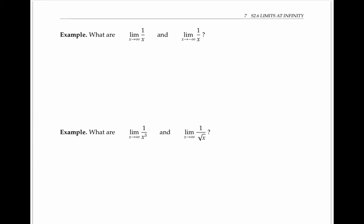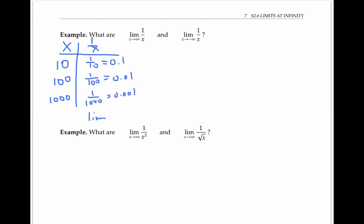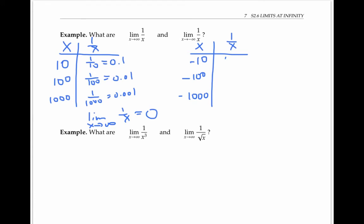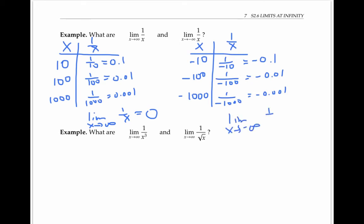Finally, let's look at limits at infinity for some functions without looking at the graphs first. To find the limit as x goes to infinity of one over x, as x gets bigger and bigger, one over x gets smaller and smaller. So the limit as x goes to infinity of one over x equals zero. Similarly, the limit as x goes to negative infinity of one over x — as x goes through numbers that are negative but larger and larger in magnitude, one over x is also negative but smaller and smaller in magnitude — so this limit is also equal to zero.